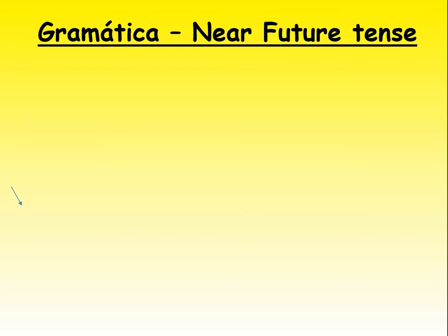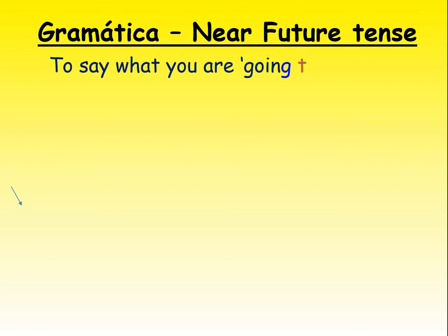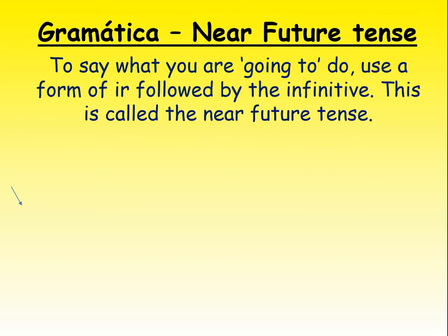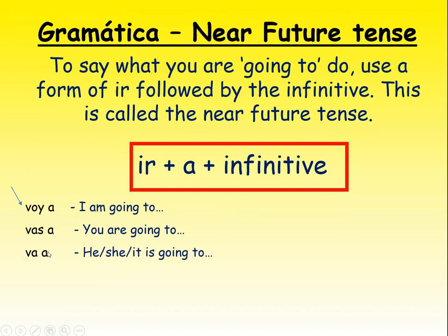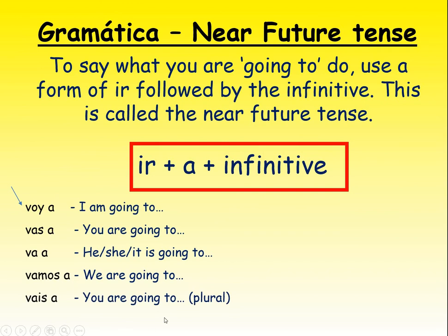You have the grammar of this in your grammar books, so you don't need to write it out again - though you can, it can help it stick. To say what we're going to do, we use a form of 'ir' (meaning 'to go'), followed by 'a', followed by the infinitive. It's what we call the near future tense. The different parts of ir are: 'voy' for I am going to, 'vas' for you are going to, 'va' for he/she/it is going to, 'vamos' for we are going, 'vais' for a group of you, and 'van' for they are going.